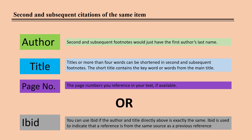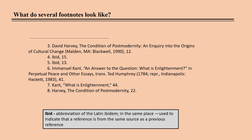IBID is an abbreviation of the Latin word 'ibidem,' meaning 'in the same place,' used to indicate that a reference is from the same source as a previous reference. In this example, notes 4 and 5 both come from the David Harvey article cited at note 3, but the information is from different pages within the article. Note 7 is a quote from a different page in the same article as note 6.